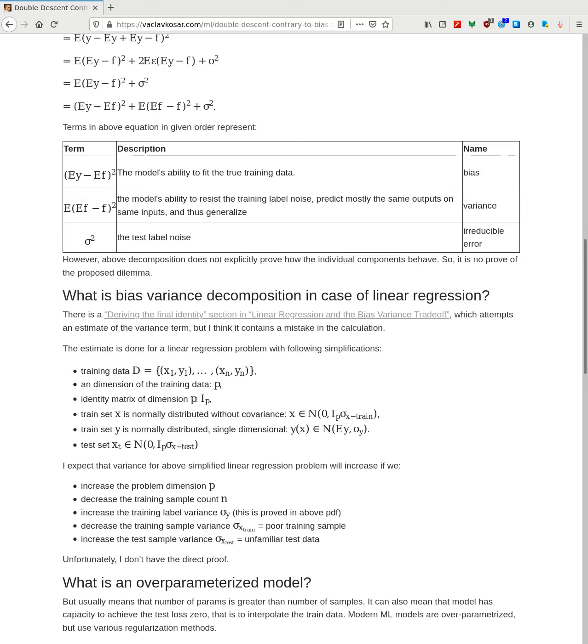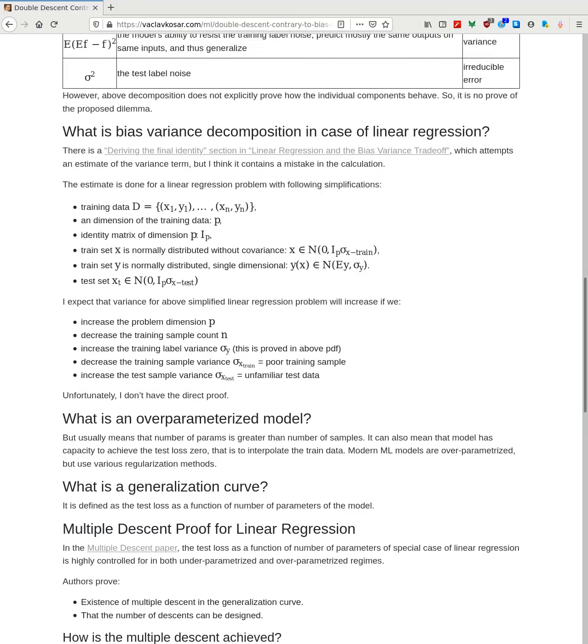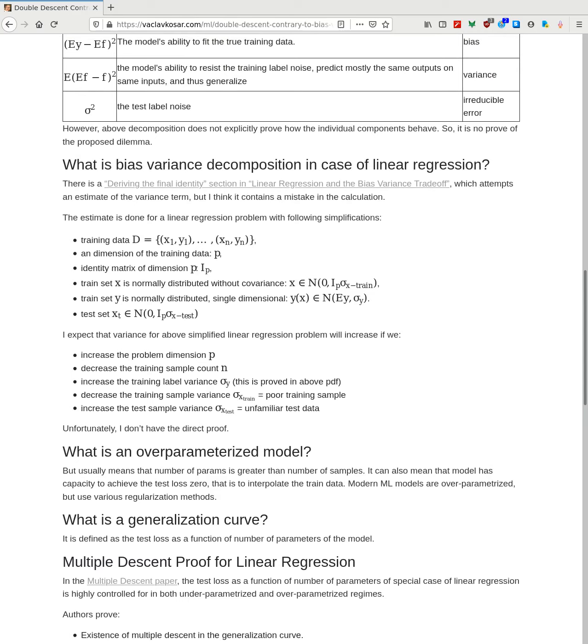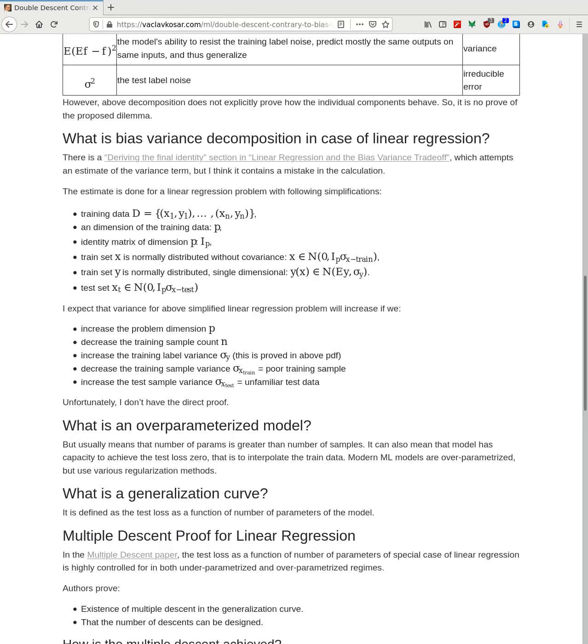So basically it's model's ability to resist the training label noise and being sort of resistant to the different choices of the input samples. Being able to generalize. This is the variance. This is the part which speaks about the ability to generalize, to find sort of the consistent solution, the correct solution. And here, one of the expectations here is that the average f, this expected f, should be actually the true function. This expected f is the true function. How close are we to the true function? So as I mentioned, this is interesting, the decomposition. It does not prove anything about the dilemma itself.